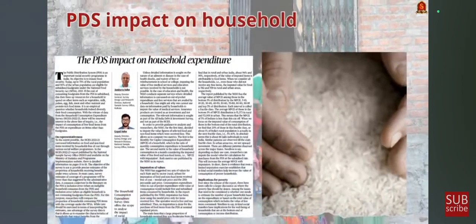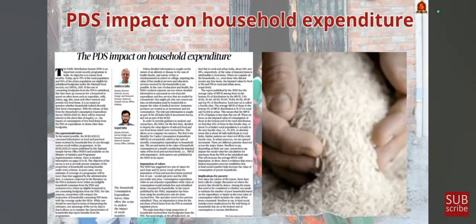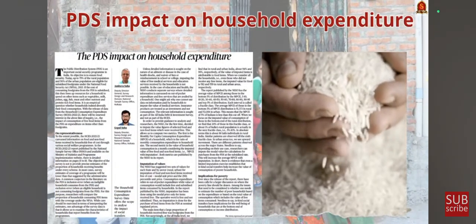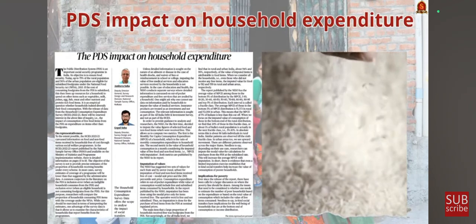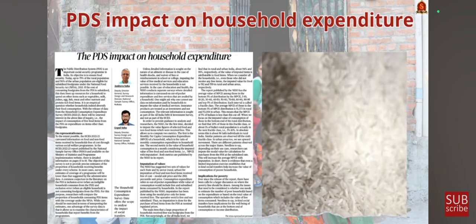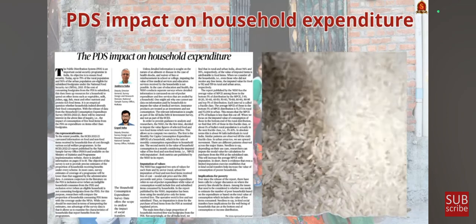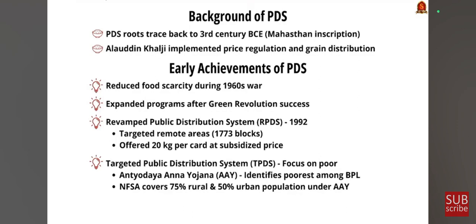This article discusses PDS impact on household expenditure. PDS stands for Public Distribution System. Questions on the Food Corporation of India, PDS, or FSSAI are frequently asked in both prelims and mains. The PDS traces back to ancient India where the Mahasthan inscription has evidence of its existence. In the medieval era, Alauddin Khilji implemented price regulation and grain distribution, which are the main objectives of PDS. The PDS reduced India's food scarcity during the post-war era around the 1960s and expanded the success of the Green Revolution.